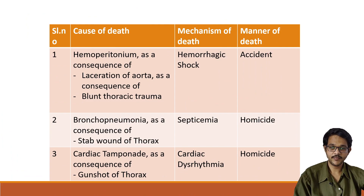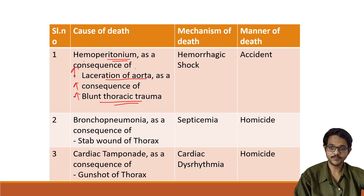To summarize cause, mechanism, and manner of death, we will look at examples. For example, hemopericardium — this is the cause of death, the terminal event. It may be caused by laceration of the aorta, which is a consequence of blunt thoracic trauma. So here hemopericardium is the cause, caused by aortic laceration, caused by blunt thoracic trauma. The mechanism of death is hemorrhagic shock — the physiological change which led to death. The manner of death is accidental, as the blunt trauma was caused by some foreign object falling on the person's thoracic region.